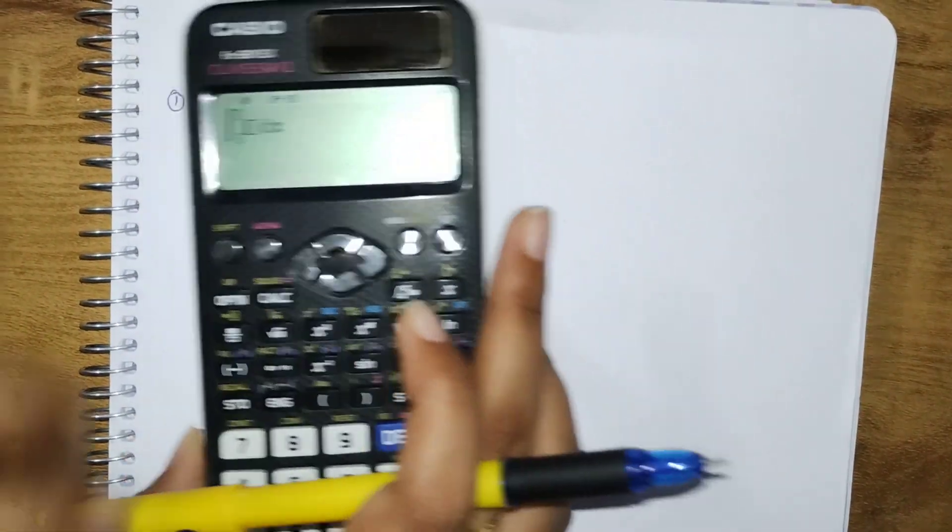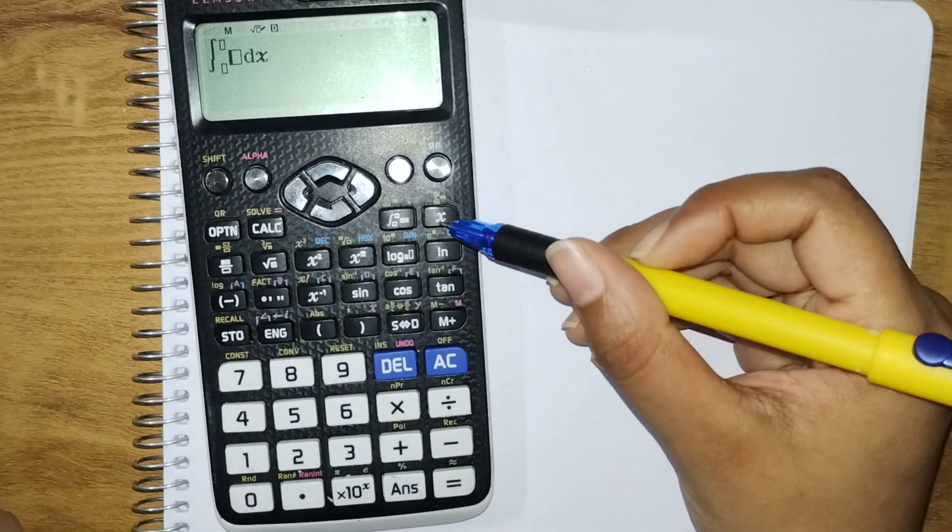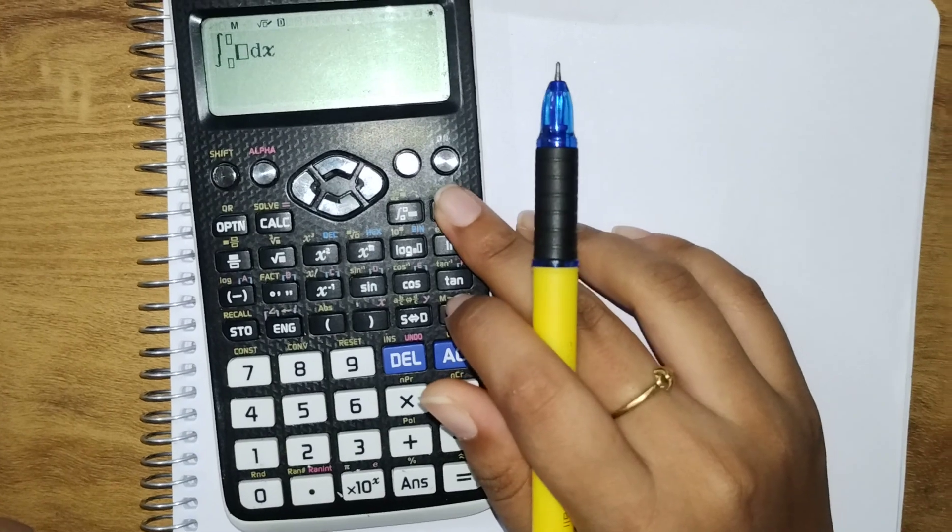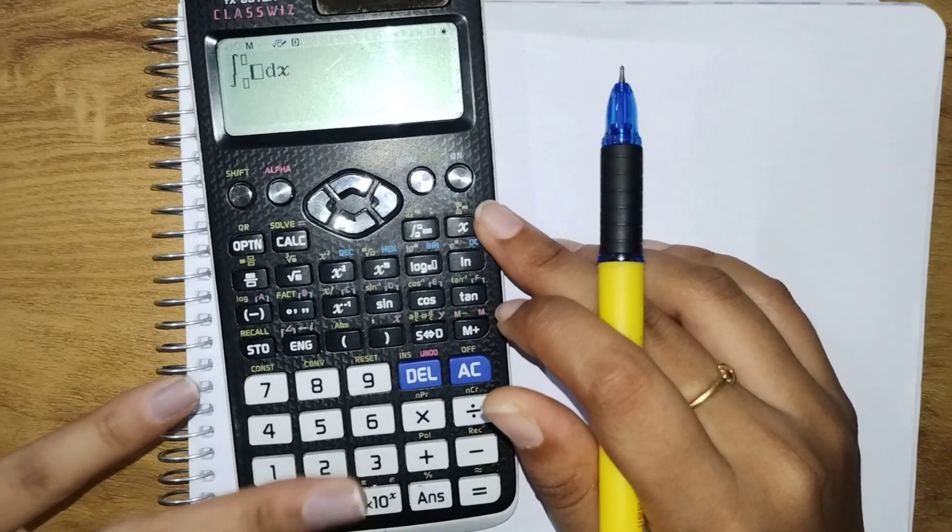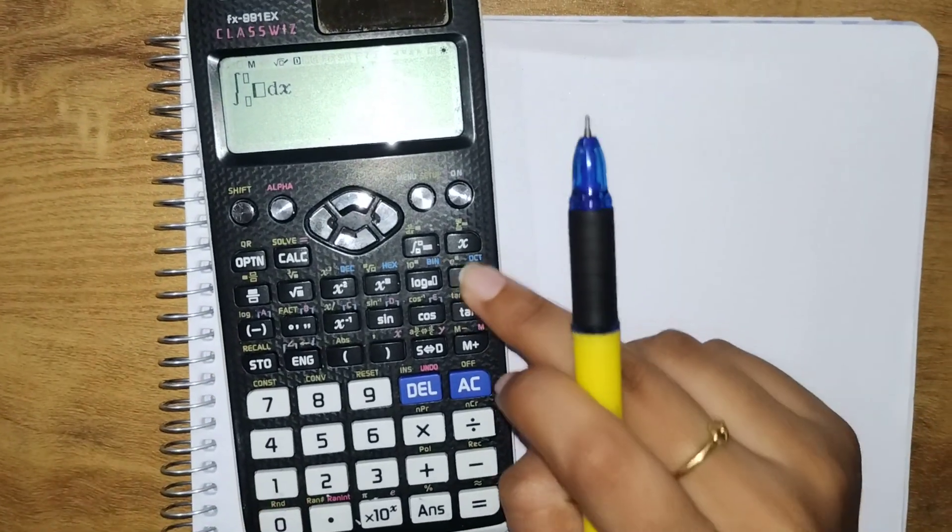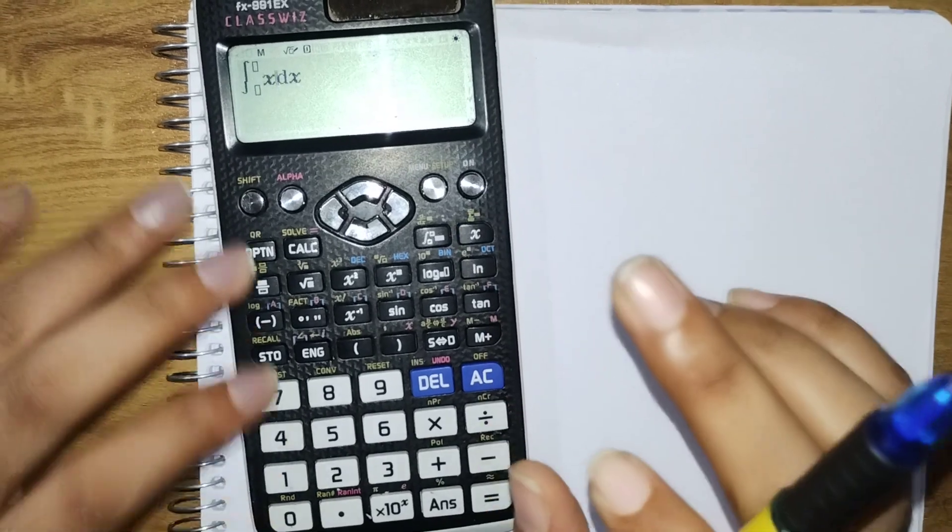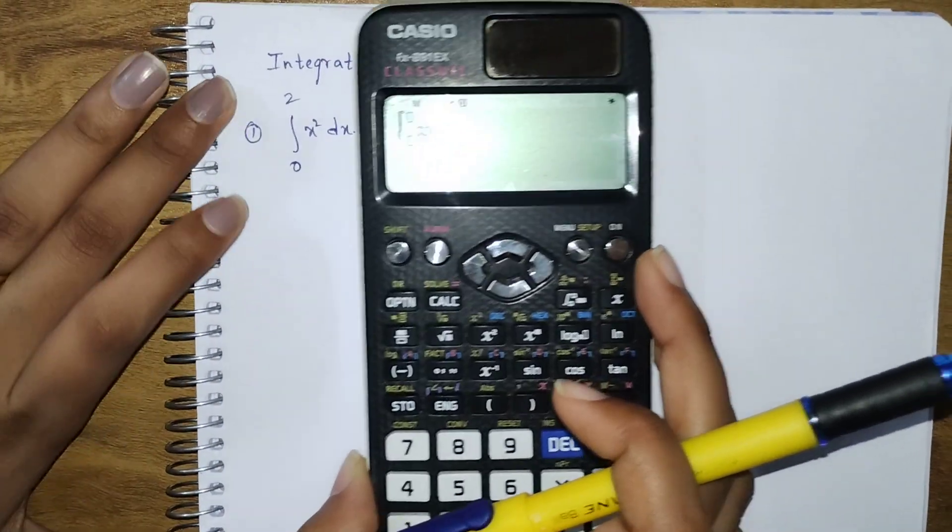Right now we need x². You can see the x here. You can directly click on this, or else you have to click on shift and go to another option. It's time-taking, so better we'll go with this x. Now we need to give the limits, 0 and 2.